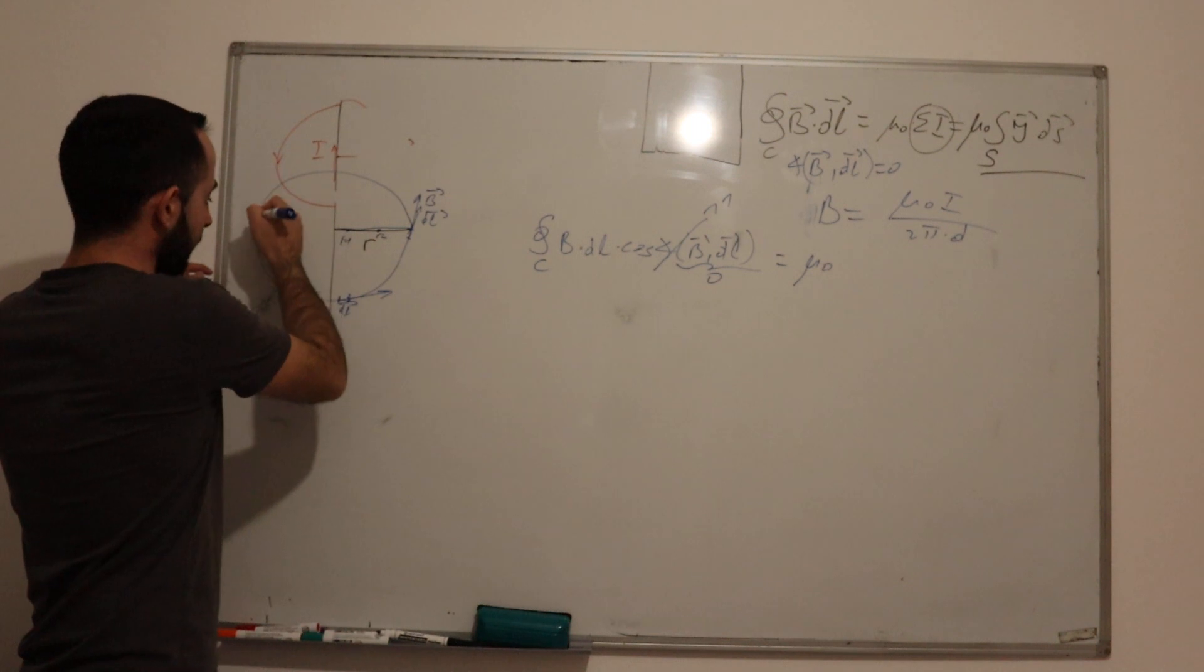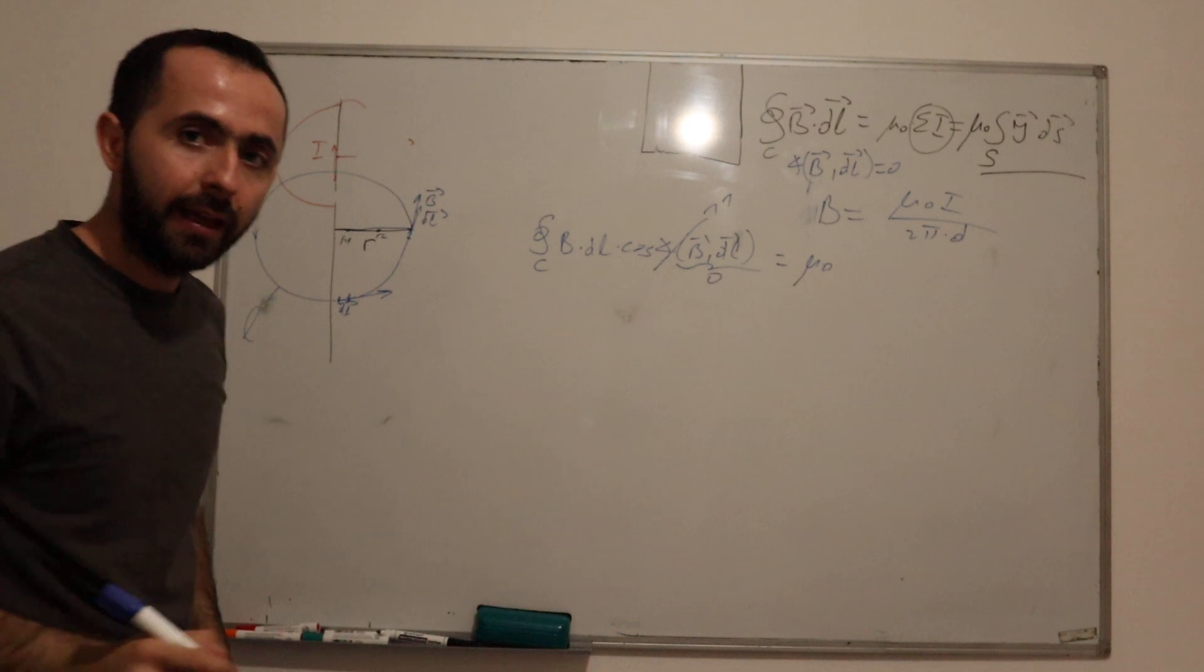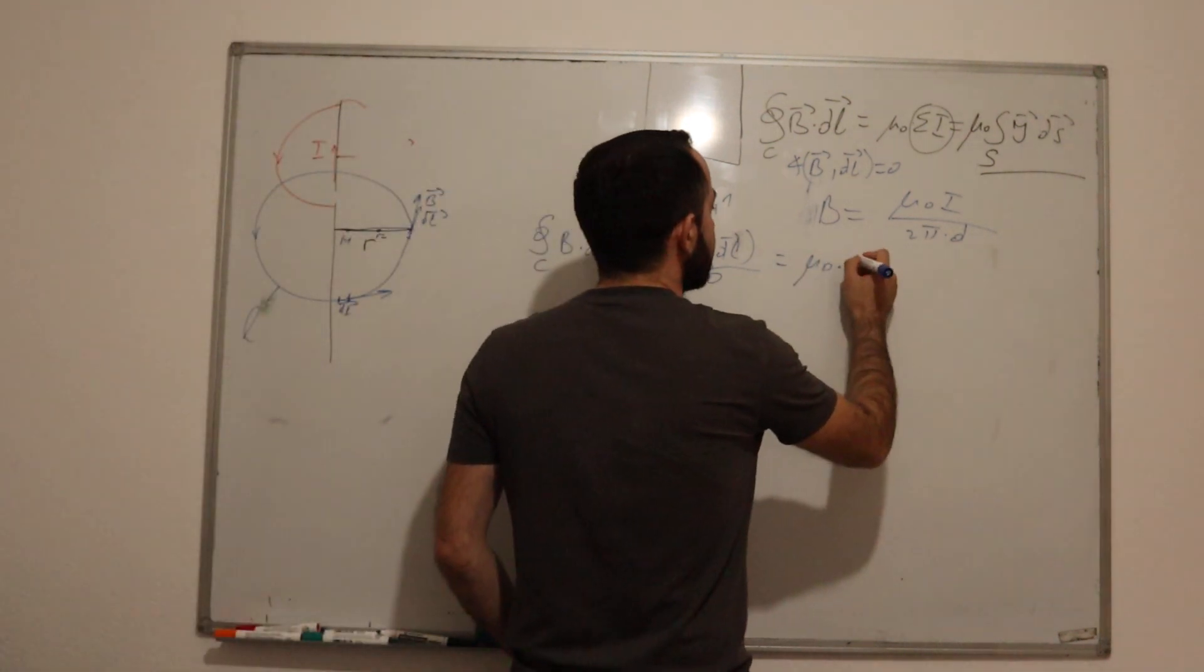So inside of this closed contour, we only have one current which is I.